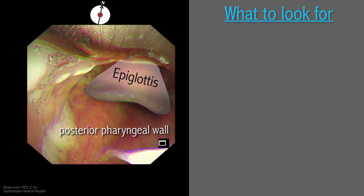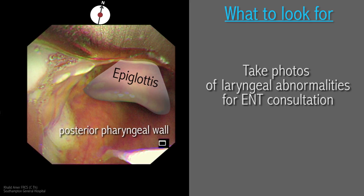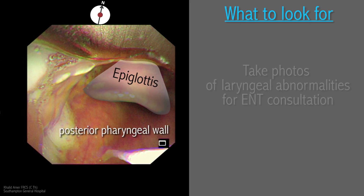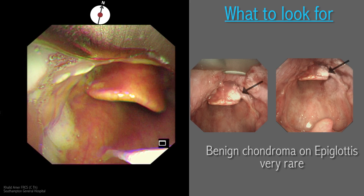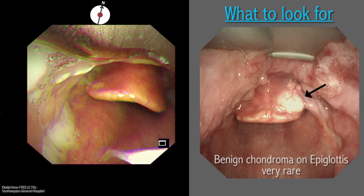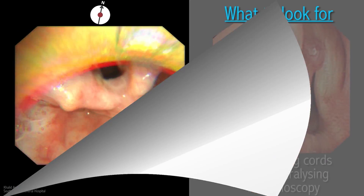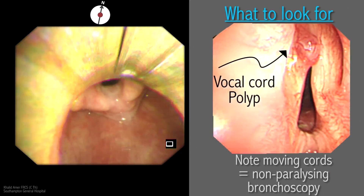The clinician should make note of abnormalities encountered during inspection of the epiglottis and larynx. Abnormalities should be documented by taking photographs and passed on to the ear, nose and throat surgeons for consultation. We called the ENT colleagues in the next door theatre to advise on a lesion on the epiglottis, and it transpired to be a benign chondroma for which biopsy was not required.